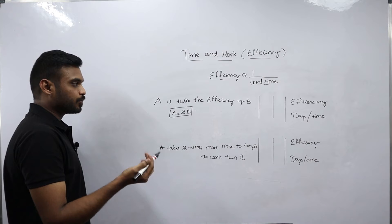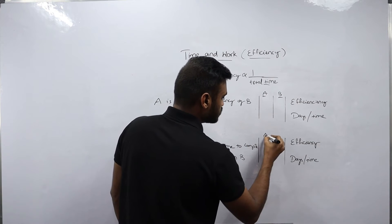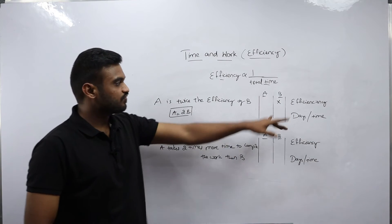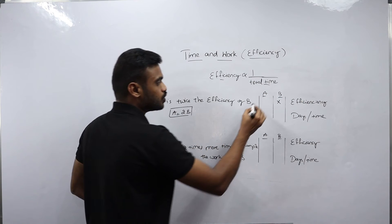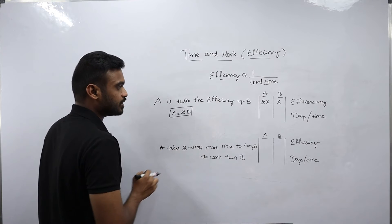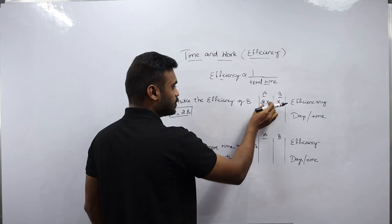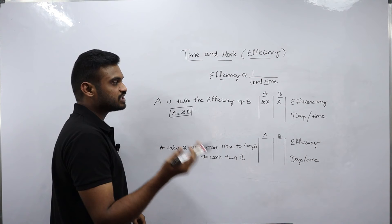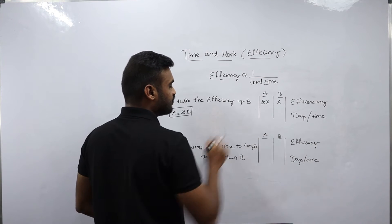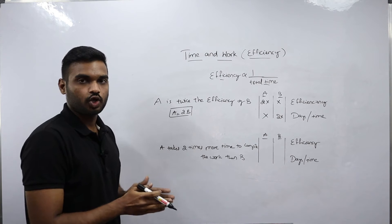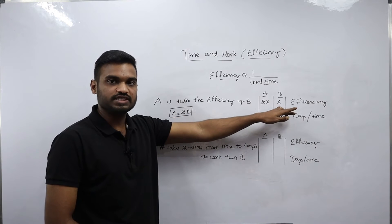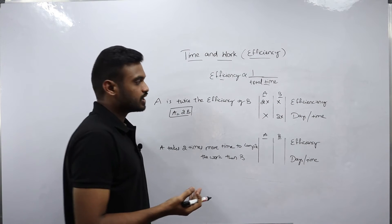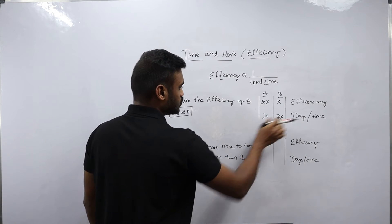Since efficiency and total time are always inversely proportional, if efficiency of B is x and efficiency of A is 2x, the total time taken by A and B will be x and 2x in reverse. So if B's efficiency is x, the time taken by B is 2x days and time taken by A is x days. We can also write it as: if B's total time is x-dash, then A's total time is x-dash divided by 2. Both representations are correct.